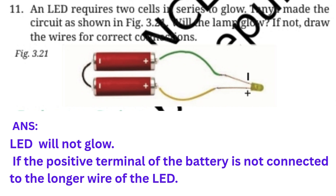Question number eleven: An LED requires two cells in series to glow. Tanya made the circuit as shown in figure 3.22. Will the lamp glow? If not, draw the wires for correct connections. Answer: The LED will not glow if the positive terminal of the battery is not connected to the longer wire of the LED.